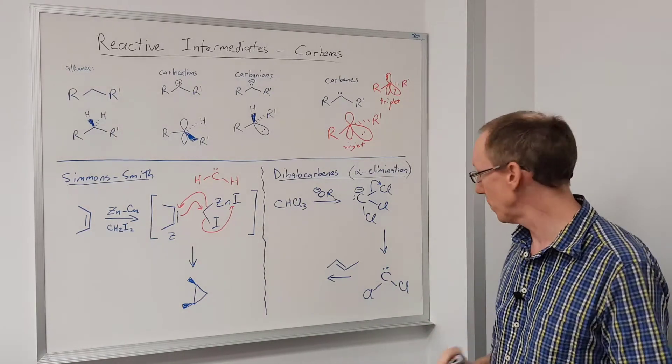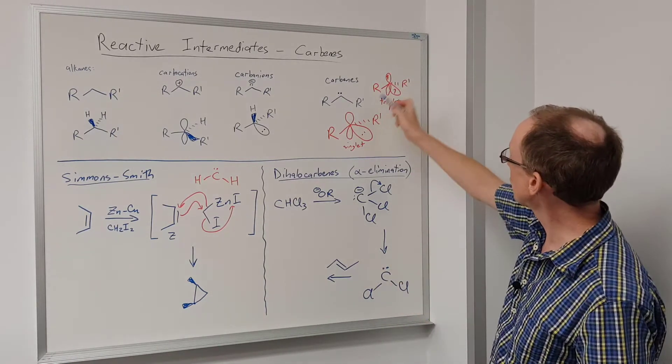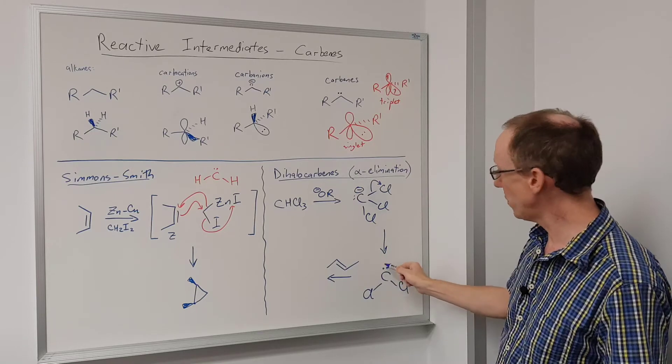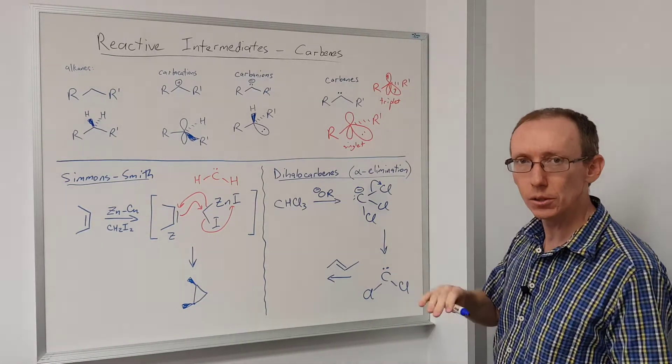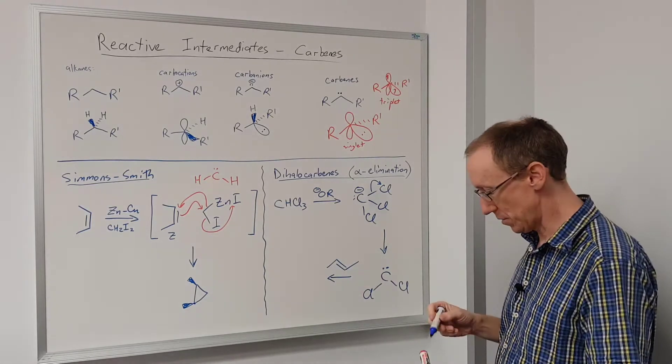So it's dichlorocarbene, and this is exactly the same structure as up here. We have a lone pair of electrons, but also a vacant p-orbital. So it can act as a nucleophile and electrophile at the same time.